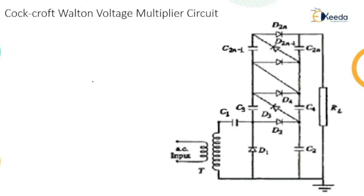Before this, we studied voltage doubler circuit and cascaded voltage doubler circuit, but there are certain disadvantages to those. In cascaded voltage multiplier circuits, for higher voltages it is cumbersome and requires too many supply and isolating transformers. It is possible to generate very high DC voltage from a single supply transformer by extending the voltage doubler circuit.